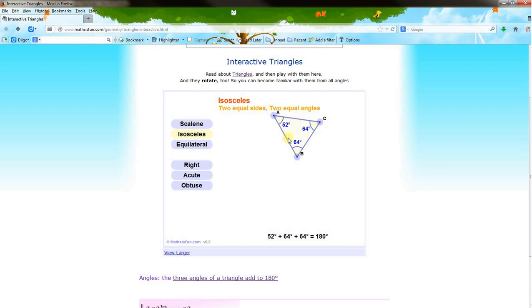A scalene triangle is also classified by its side. It means that there are no sides that are congruent, or no sides that are the same length.